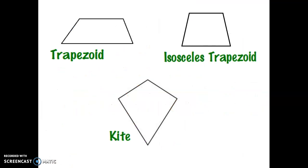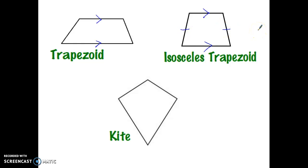We're going to take a look at these three shapes for the quadrilaterals. A trapezoid is a quadrilateral that has one set of parallel sides. The isosceles trapezoid, based on definition, has one set of parallel sides and the non-parallel sides are congruent — that's the definition for an isosceles trapezoid. My third shape is the kite. The kite does not have any sides that are parallel; however, the kite does have two sets of consecutive sides that are congruent. That's the definition for a kite.